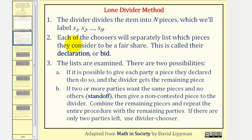Step two: each of the choosers will separately list the pieces they consider to be a fair share. This is called the declaration or bid. Step three: the lists are examined and there are two possibilities. A: if it is possible to give each party a piece they declared, then do so, and the divider gets the remaining piece.